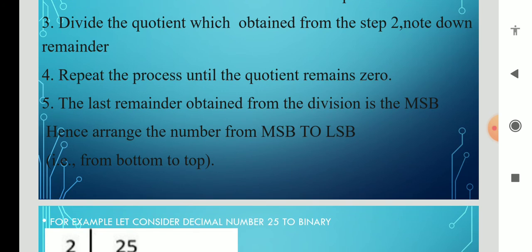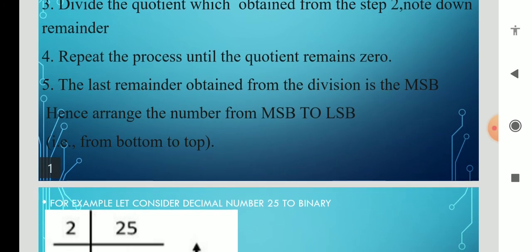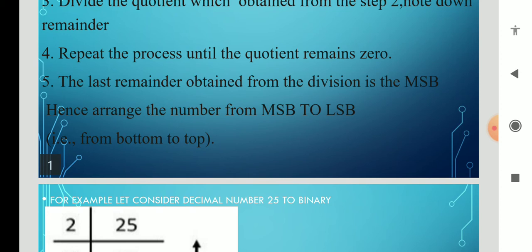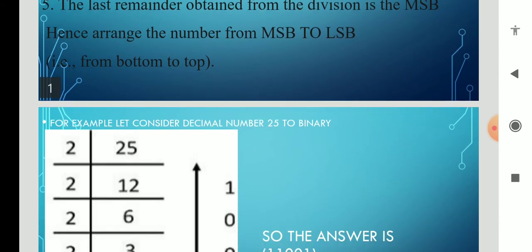The last remainder obtained from the division is called the most significant bit (MSB). In the last step, the remainder is called MSB. We need to arrange the numbers from most significant bit to lowest significant bit, that means from bottom to top. Let's see an example.